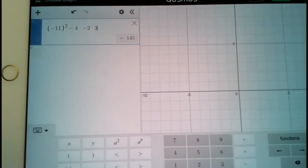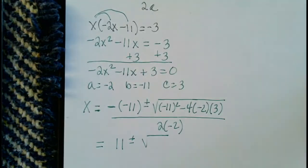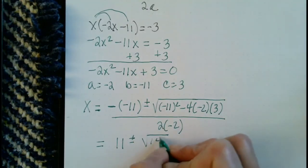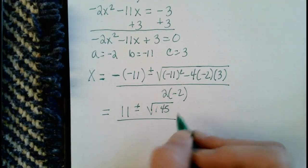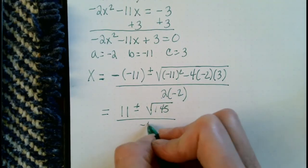so I'm going to write that down, all divided by 2 times negative 2, which is negative 4.